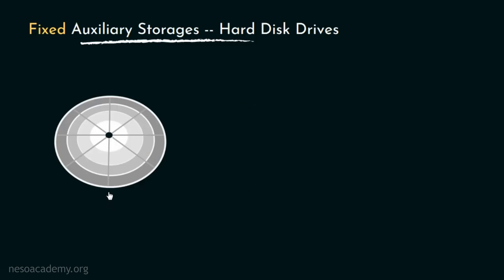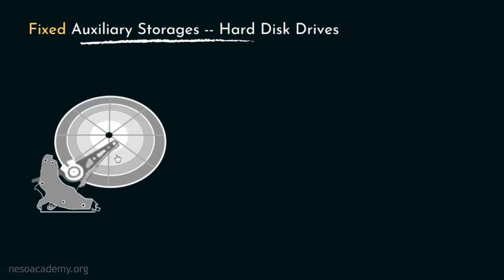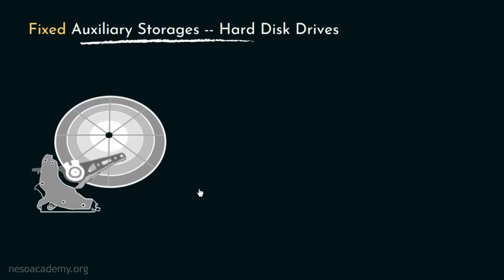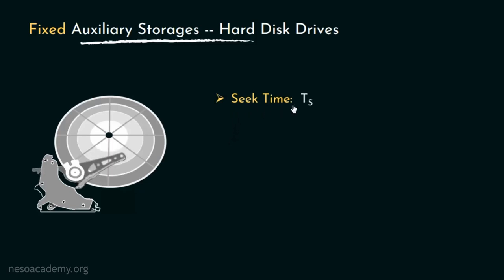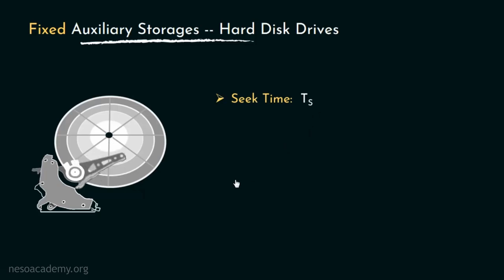In order to read data from or write data on the disk, there is a read-write head. To read or write, the head needs to move from one track to another. The time taken to move the read-write head from one track to another is called the seek time, or TS.